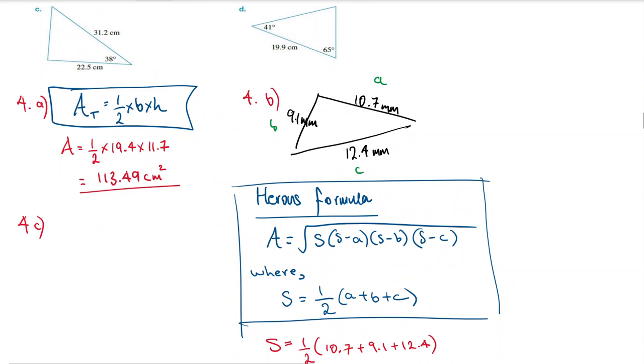For this one we need the formula: area equals one half ab sine C. You need to know that the lowercase a and b are the sides, and the capital C is the angle.